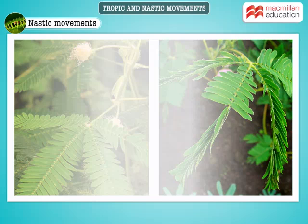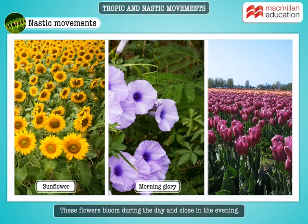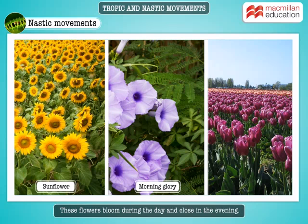The leaves of oxalis move in response to the intensity of light — they open up in daylight and fold when the intensity of light is less. Flowers such as sunflowers, morning glory, and tulips bloom during the day and close in the evening.